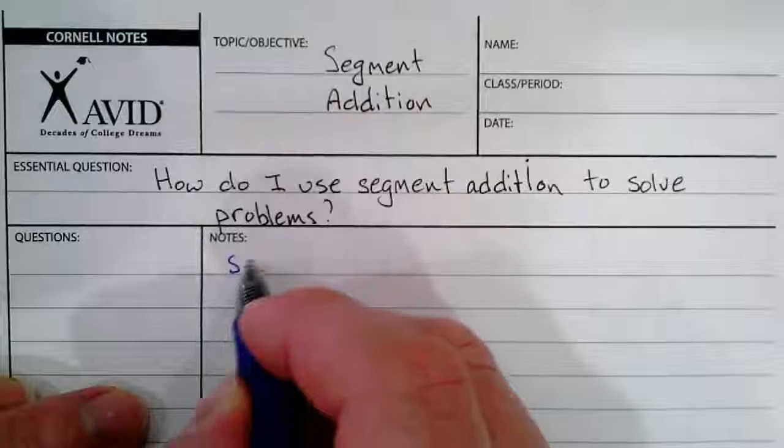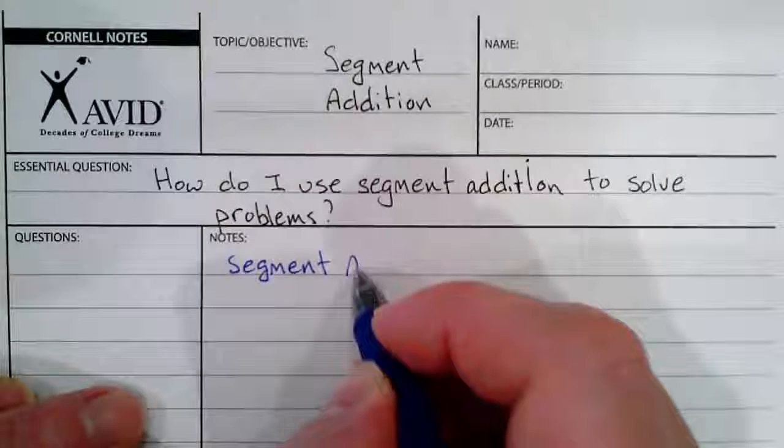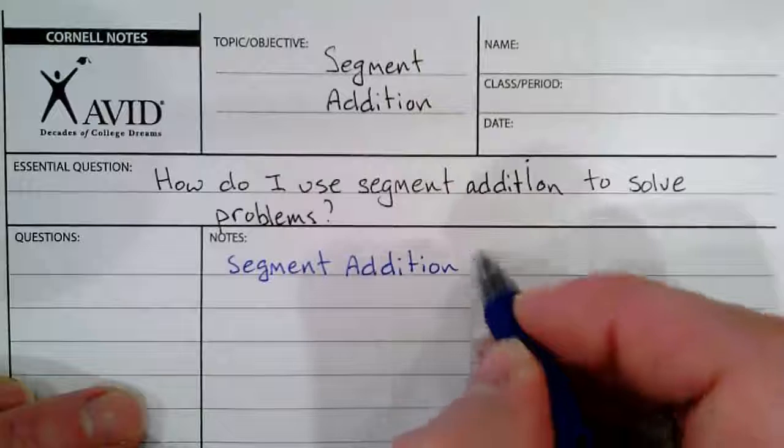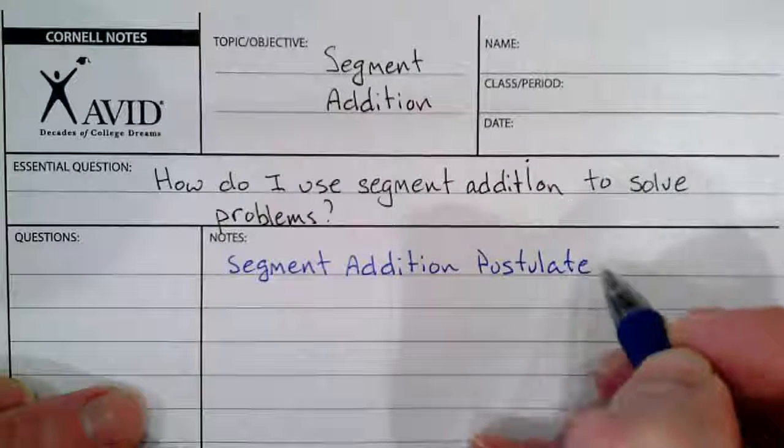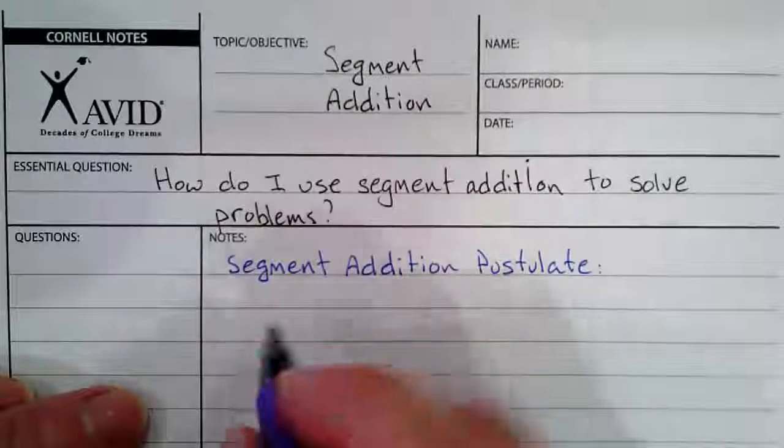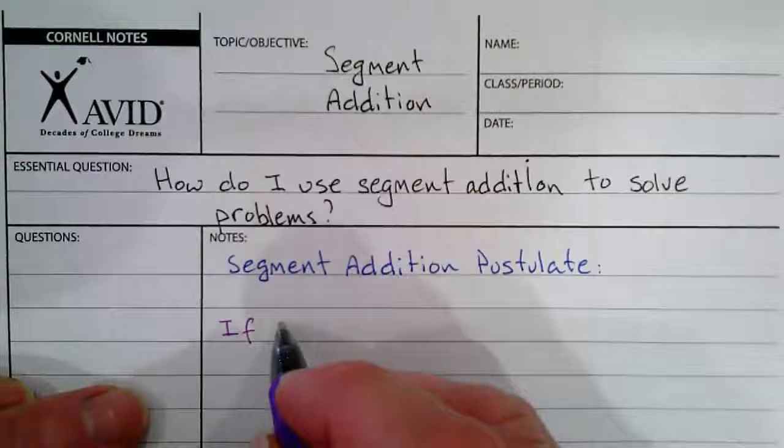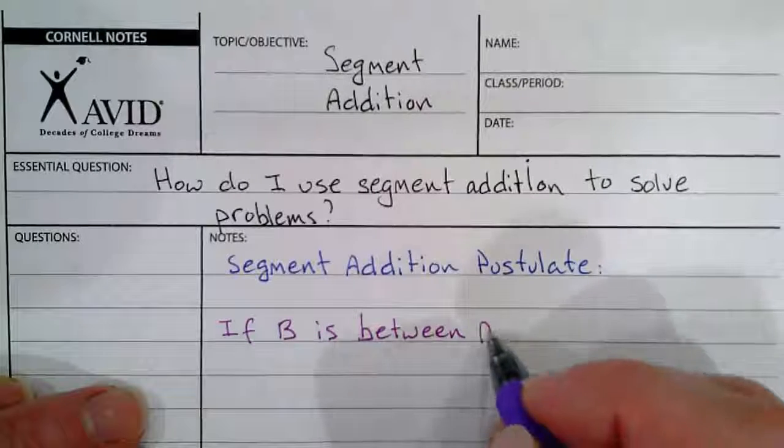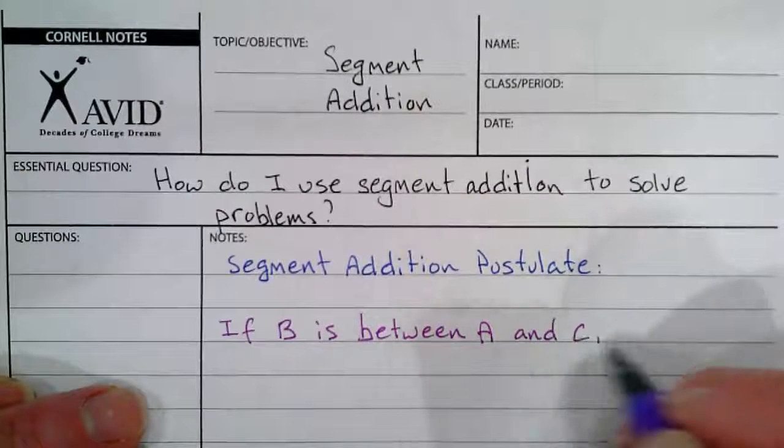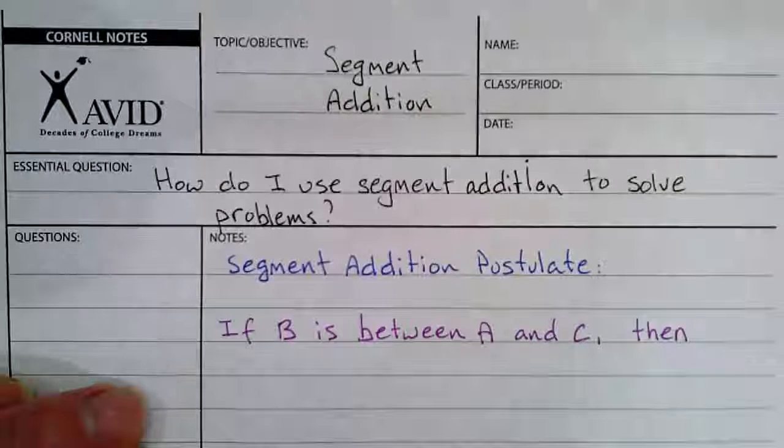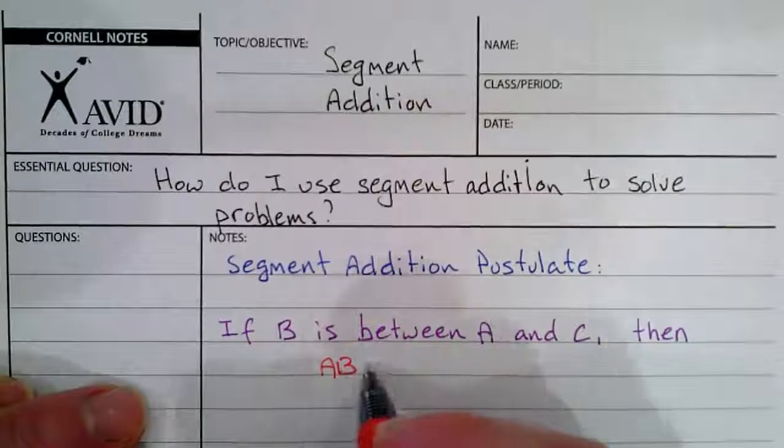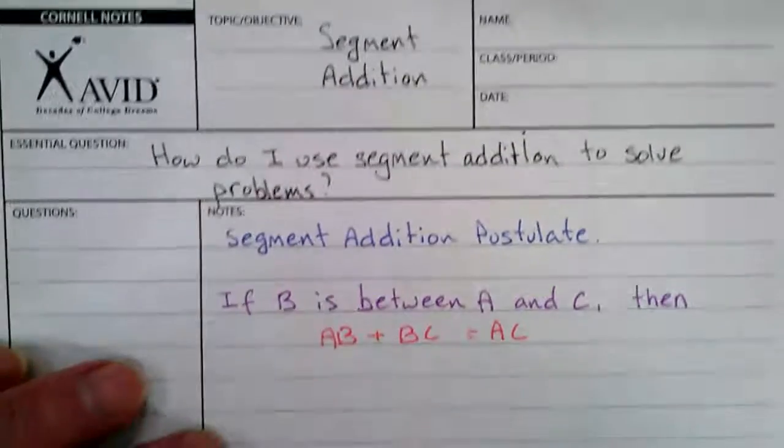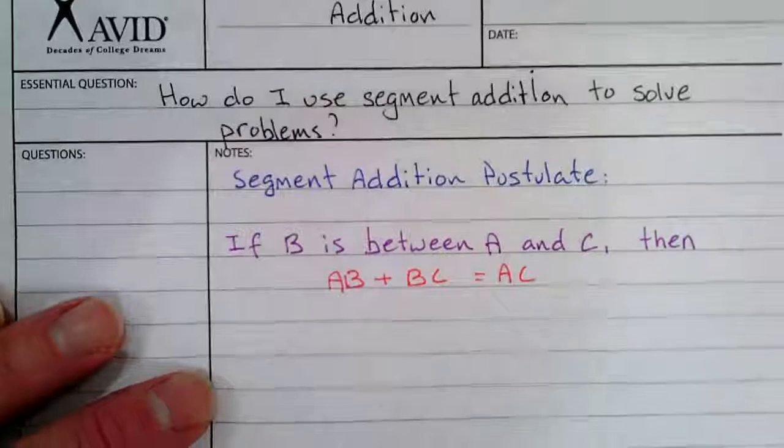So we're going to write segment addition postulate. If B is between A and C, then AB plus BC equals AC.